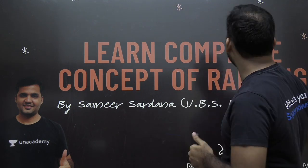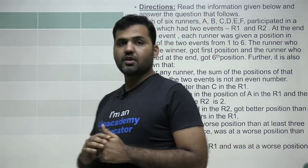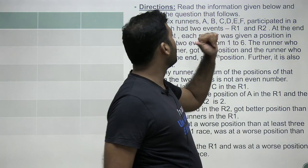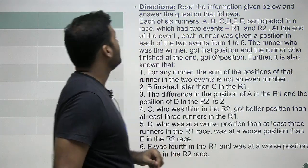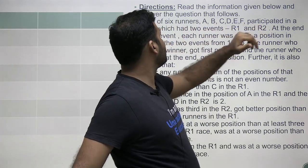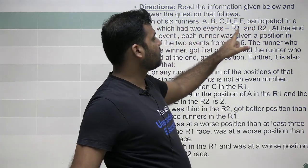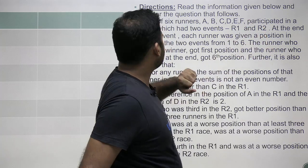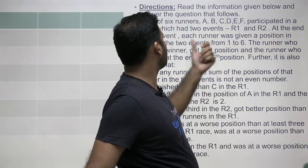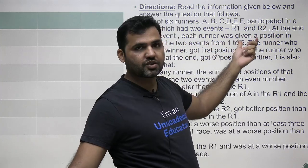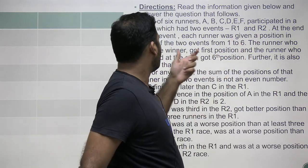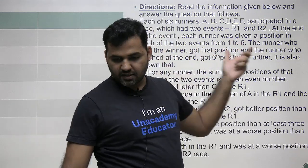Now let's have a look at the set we are supposed to discuss in this video. The directions say: read the information given below and answer the questions that follow. Each of six runners — A, B, C, D, E, F — participated in a race which had two events, R1 and R2. At the end of the event, each runner was given a position in each of the two events from 1 to 6. The runner who won got 1st position and the runner who finished last got 6th position.